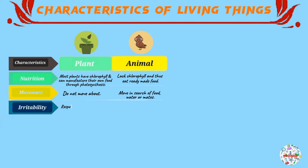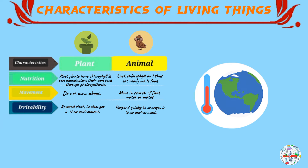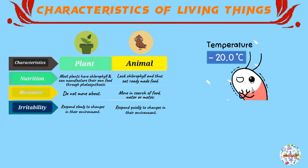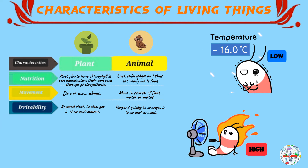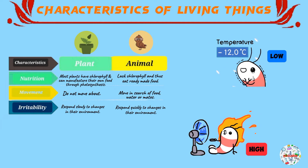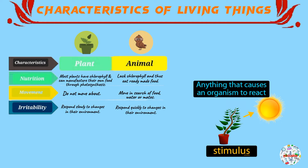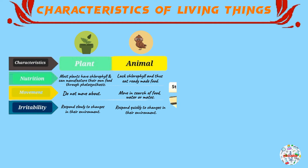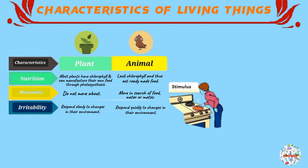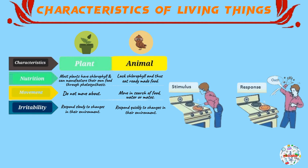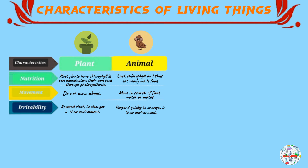Irritability. Plants respond slowly to changes in the environment. Animals, on the other hand, respond very quickly to changes in the environment. Living in an environment where the conditions continuously change — for example, temperature, light intensity, atmospheric pressure, humidity, and so on — these are continuously changing. Organisms not only have the ability to detect when changes happen, but they also have the ability to respond to them. Animals can respond very quickly to them. Plants, on the other hand, respond slowly.